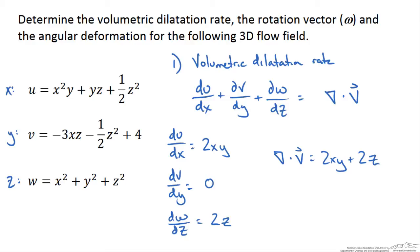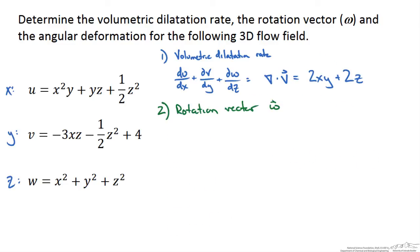Next we are going to look at the rotation vector. Let's first look at the rotation around the z axis. To do this we take the average of the angular velocity which in this case is the difference between dv/dx and du/dy.